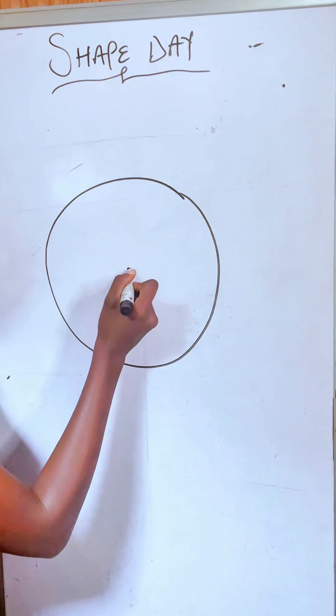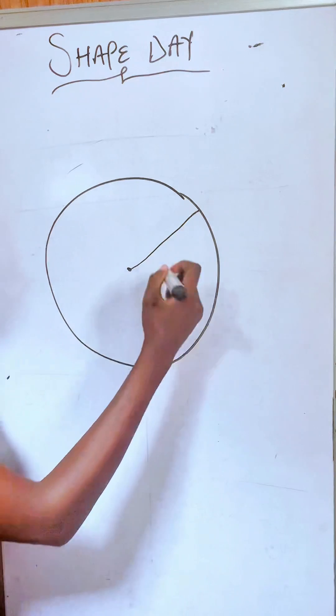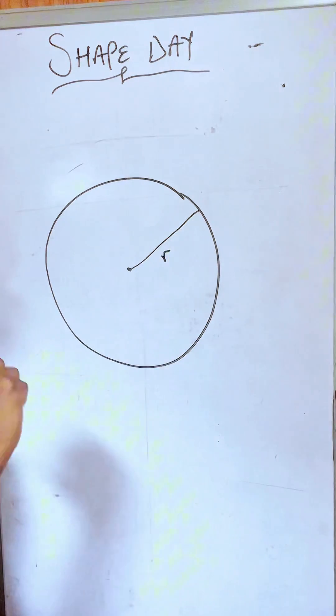So the distance from the center to any one of its boundaries is called your radius. It's denoted with the letter R.